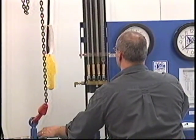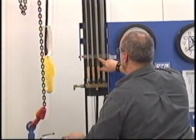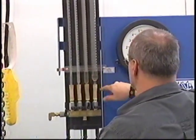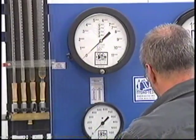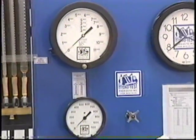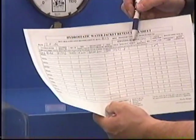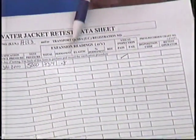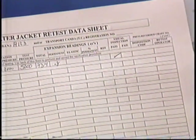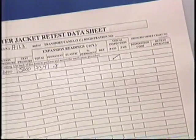And in this case we have 0.8 cc's of permanent expansion. We write that figure in. A little bit more math, we now need to figure out what the elastic expansion is, and that is the difference between the total and the permanent. To get that figure we take 73.4 minus 0.8, and that gives us 72.6.